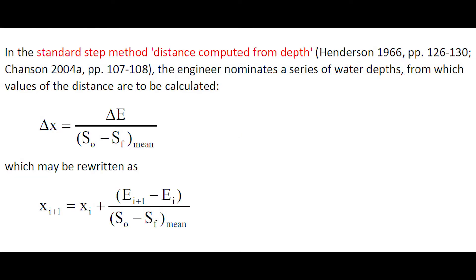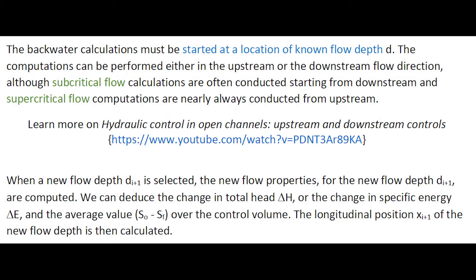In the standard step method, distance computed from depth, the engineer nominates a series of water depths from which values of the distance are to be calculated. The backwater calculation must start from a location of known flow depth. The computation can be performed either in the upstream or downstream flow direction. Subcritical flow calculations are often conducted starting from downstream.